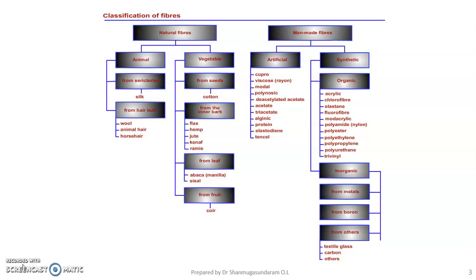Manmade fibers are basically classified into two categories: semi-synthetic fiber and fully synthetic fiber. Semi-synthetic fiber means the raw materials are taken from a natural source and are further chemically modified to make a yarn or filament. These fibers are called semi-synthetic or regenerated fibers. Examples of regenerated fibers are cuprammonium rayon, viscose rayon, polynosic rayon, acetate rayon, and triacetate rayon.